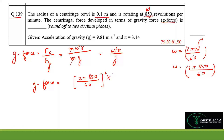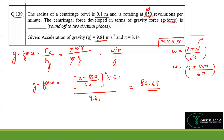G-force = (2π×850/60)² × 0.1 / 9.81. On calculating, we get 18.68, which falls within the range given by the IIT Kharagpur official answer key. So this is the correct answer.